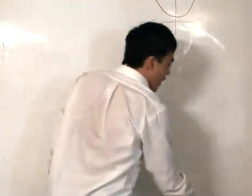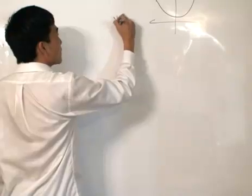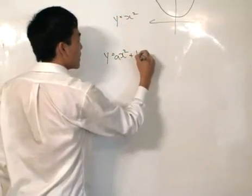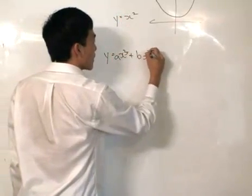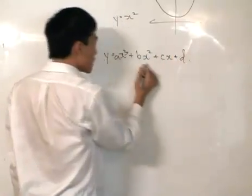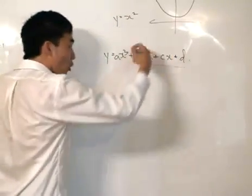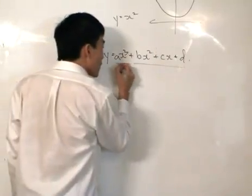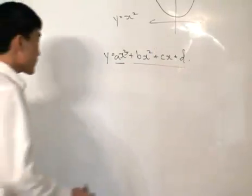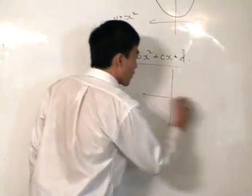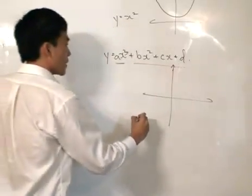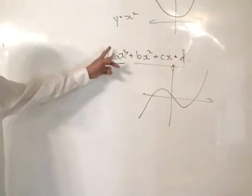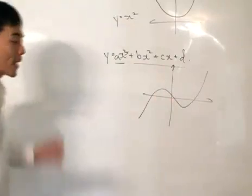We move along to y equals x³. Let's put as ax³ plus bx squared plus cx plus d. Obviously, this whole equation means a lot, but let's just focus on the first coefficient, which is a. If it's positive, the graph would go like this, as easy as that. If it's negative, it would just simply go the other way.